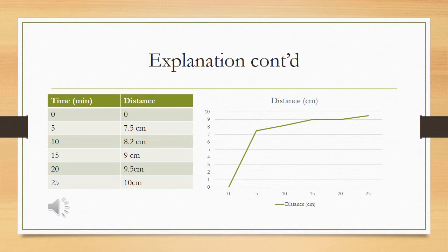We noticed that the water crept up very quickly initially — so much so that after 5 minutes it had reached a distance of 7.5 cm — but then after 10 minutes it only went up 0.7 cm to a height of 8.2 cm, and this trend continued with it only going up about 1.3 cm for the next 10 minutes or so. The growth seemed to have plateaued, and we were wondering why this happened. Some of the things we thought about were possibly gravity and also the distance the water had to travel to go further up.